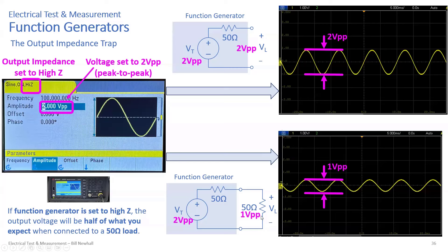The lesson is: function generators have a 50-ohm output impedance. The high Z or 50-ohm setting doesn't change that physical impedance — it just changes what the internal source voltage is set to. You have to pay attention to what load you're connecting and its resistance value. If safe to do so, you can also just adjust the amplitude up or down until you get the voltage you want at the output, but be aware that changing the load resistance will change the voltage.